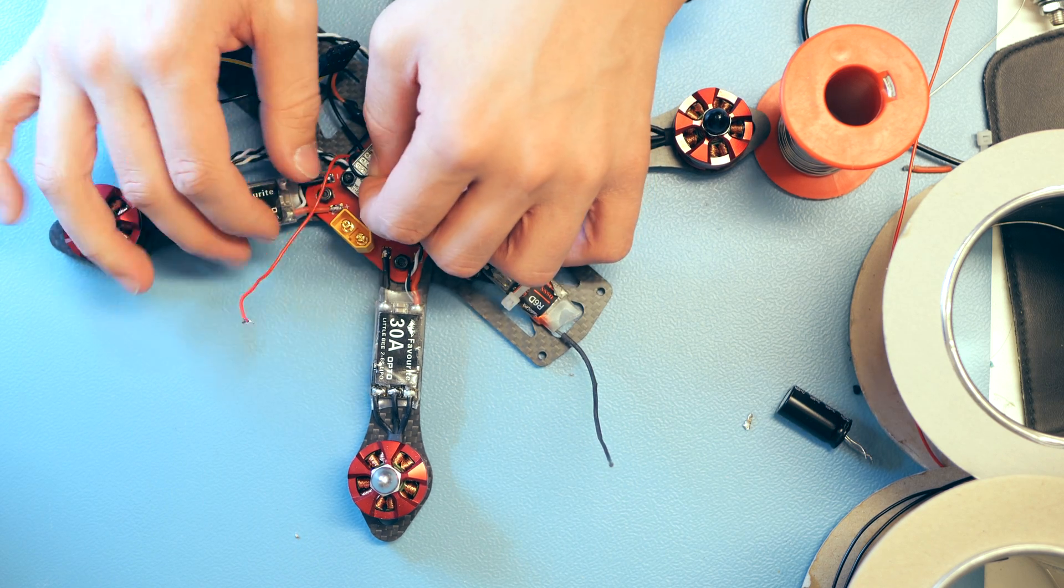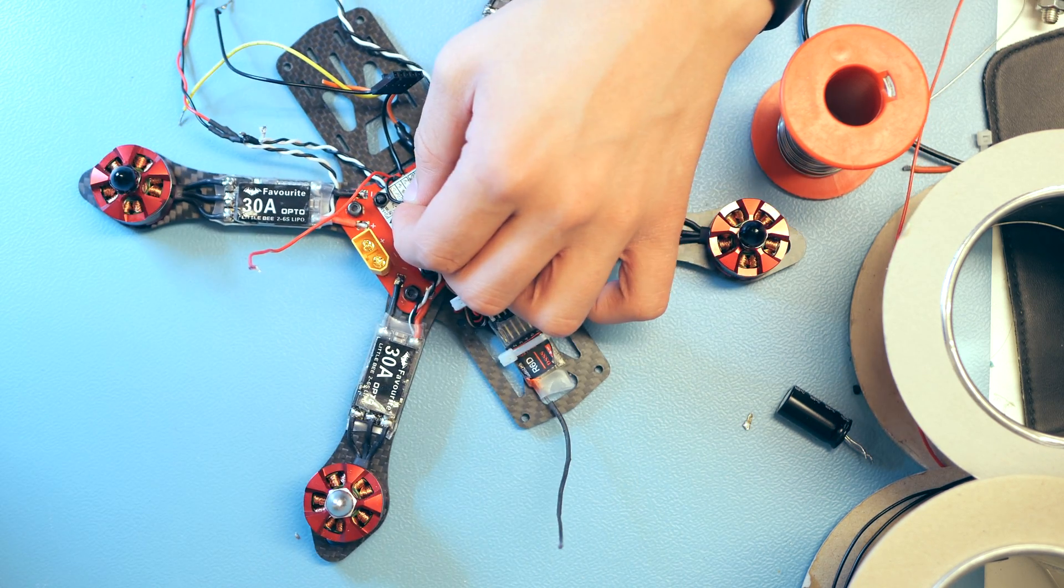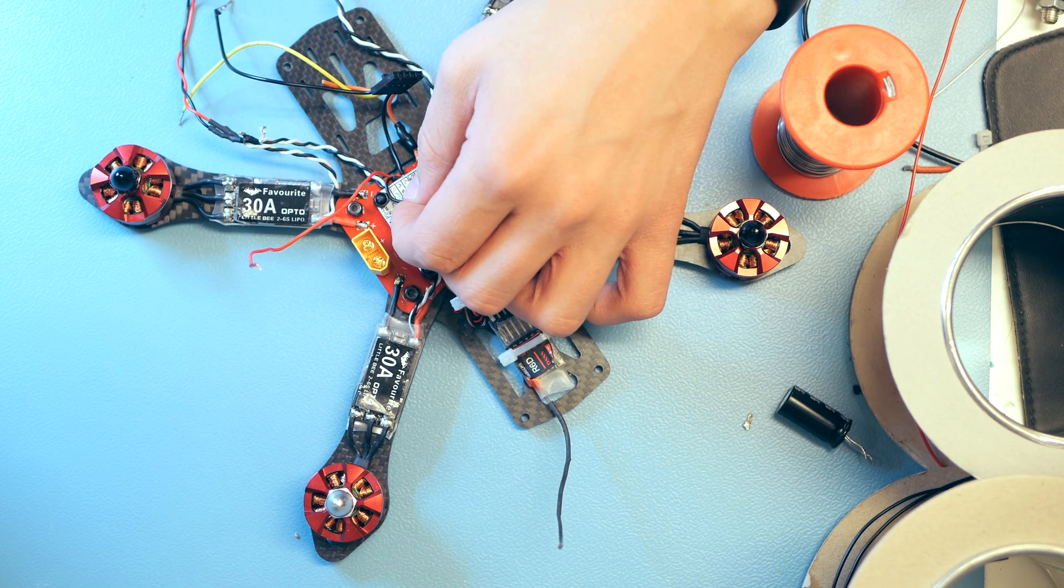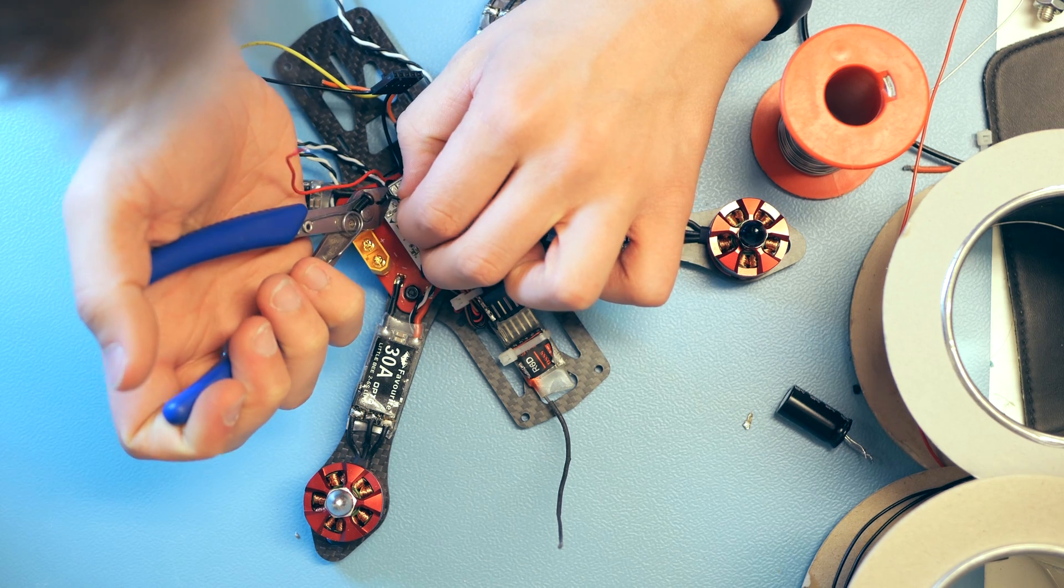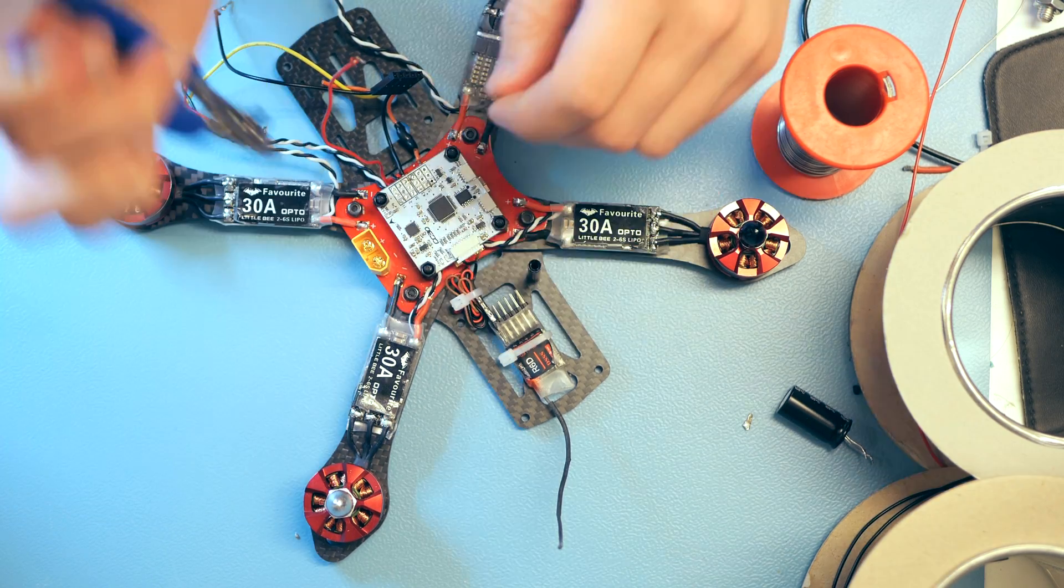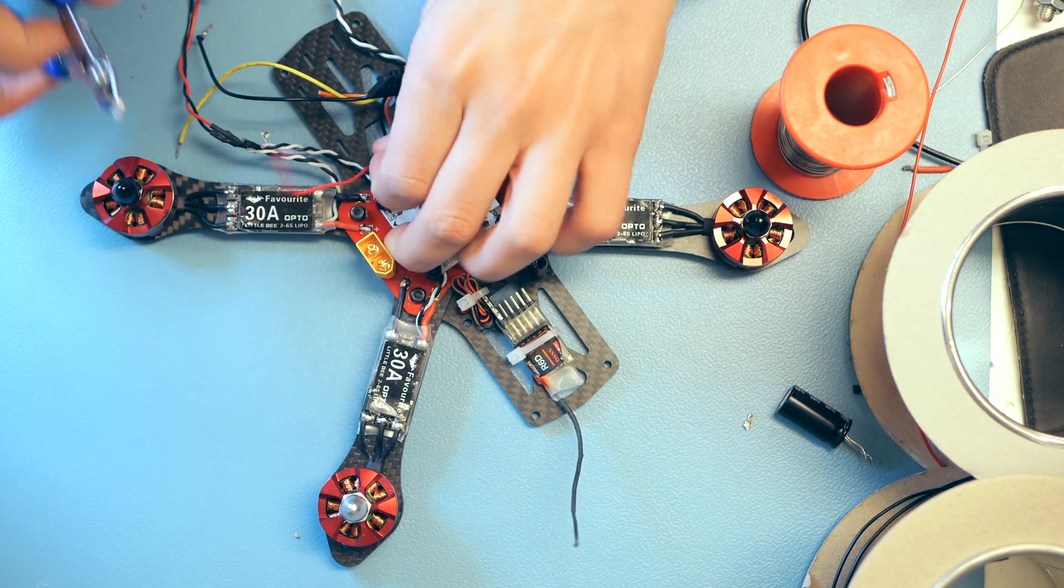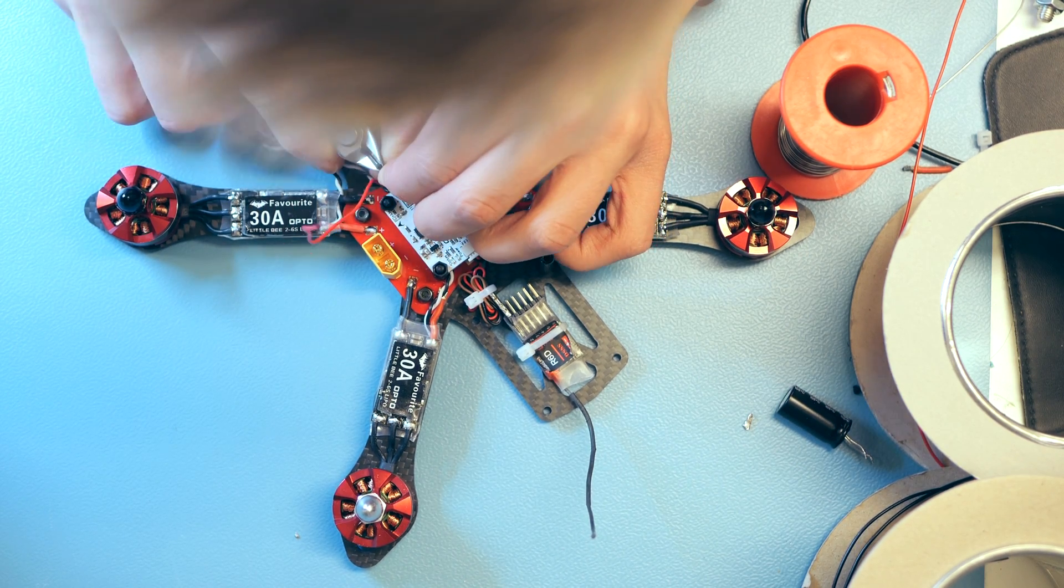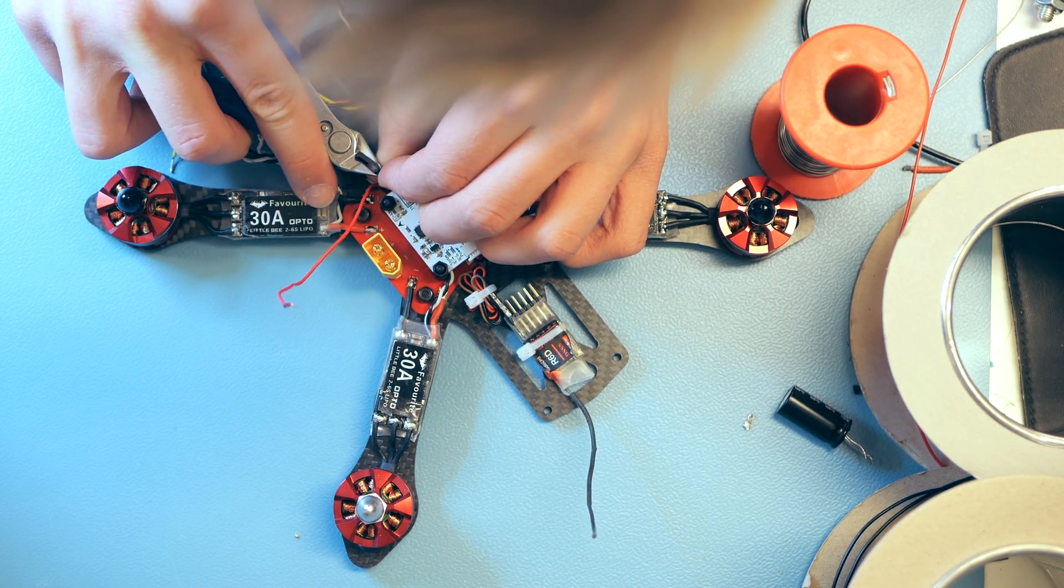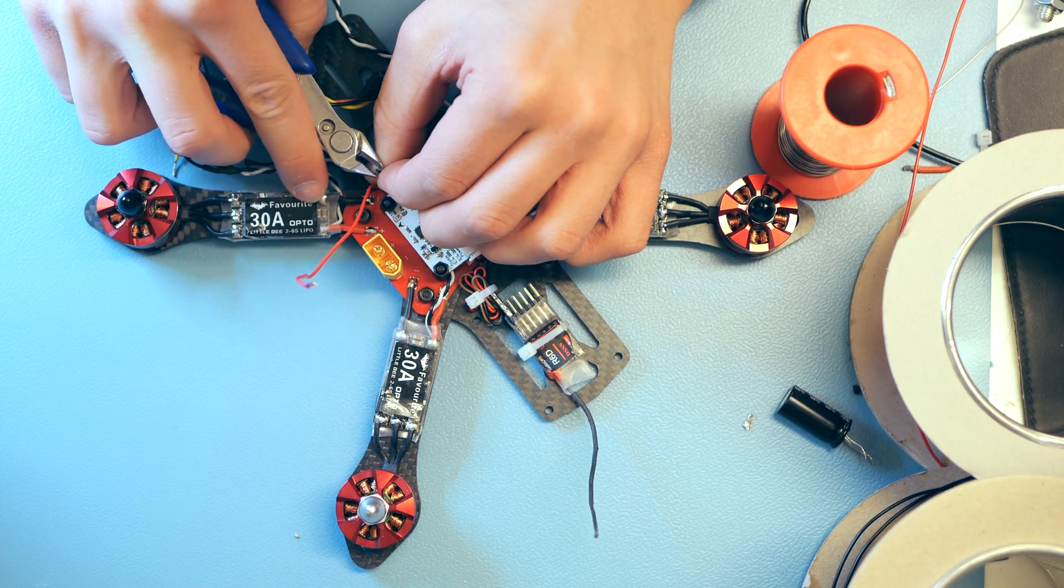With that out of the way, we can start to attach the ESCs to the flight controller. My ESCs do not have a built-in BEC, therefore they have only two wires and no plus 5 volts. That's okay, we'll just connect the ground to the ground, and then the other wire, which is the signal, to the signal. Then we'll just need to add a voltage regulator to power the flight controller instead.